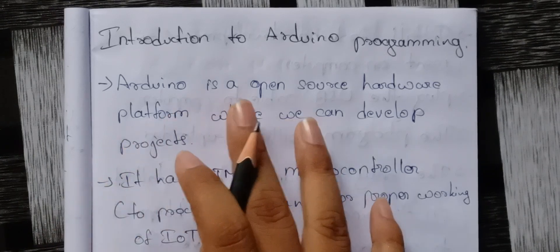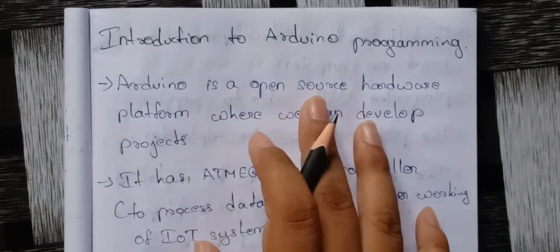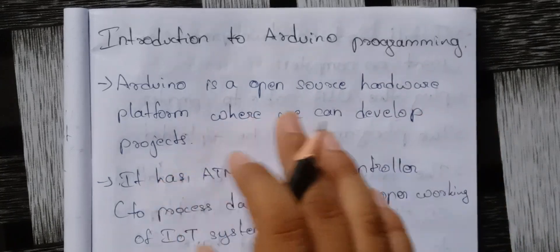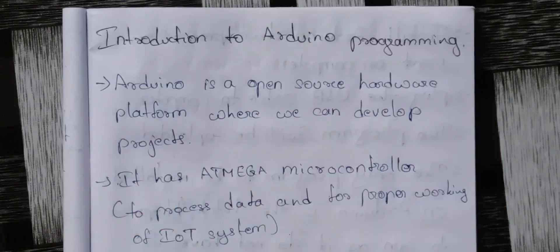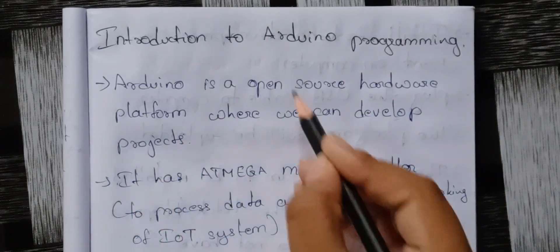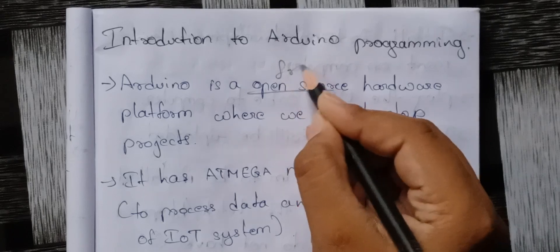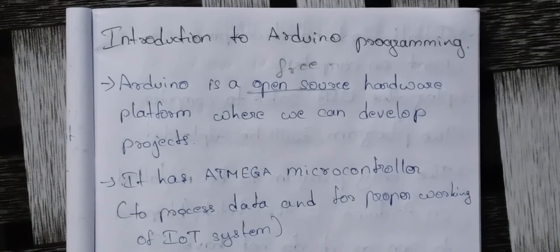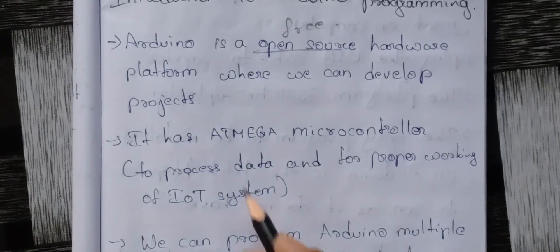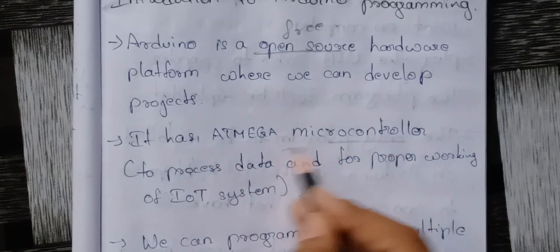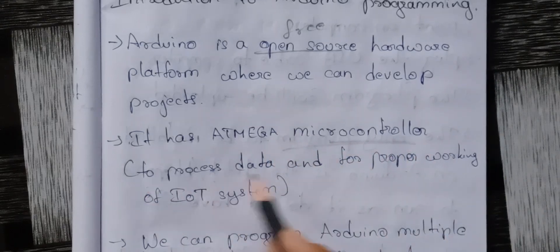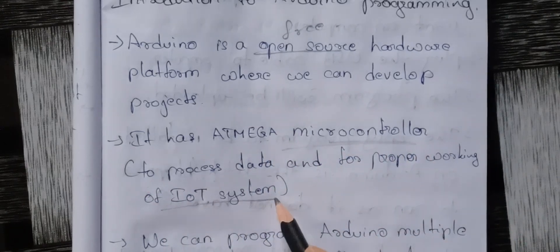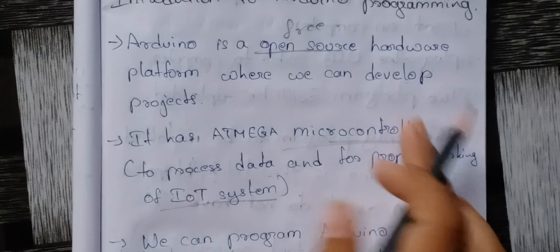Arduino is an open source hardware platform where we can develop projects. Open source means free, so it is a free hardware platform. It has an ATmega microcontroller to process data and for the proper working of an IOT system.